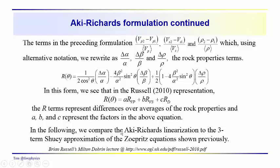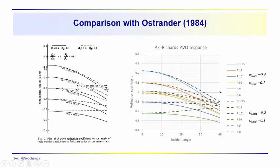We're going to compare the Aki-Richards linearization to the three-term Shuey approximation, and we'll also compare it to Ostrander. We've been using Ostrander as a benchmark - this was from Ostrander's 1984 paper.